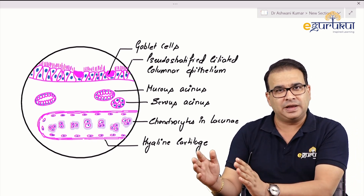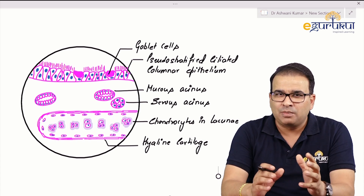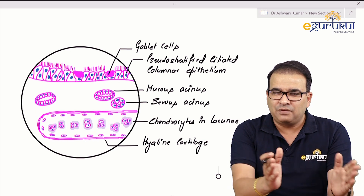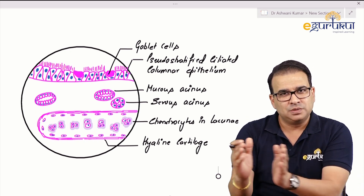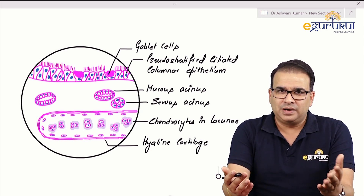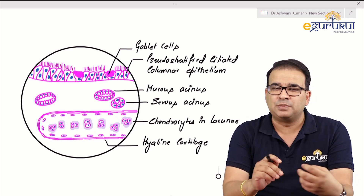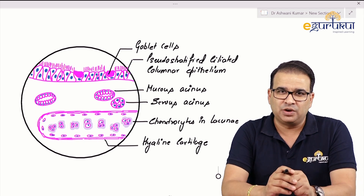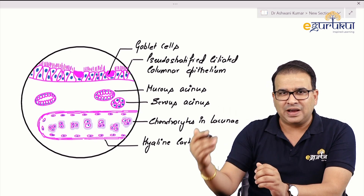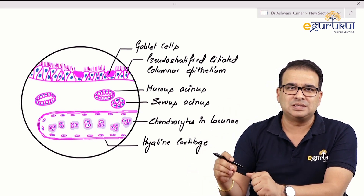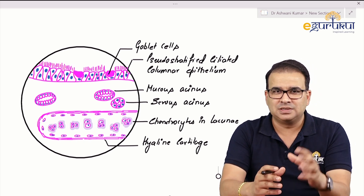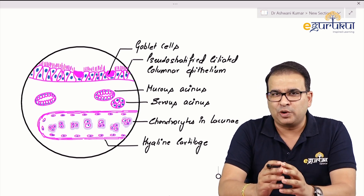Whatever features you write about for that slide should also be visible in your diagram. It's not about how fancy a diagram you draw or your drawing skills — it's about whether you are able to represent your theoretical knowledge in the diagram. This is where you can really score well. People fail to score in histology diagrams because they try to copy the atlas image. Use your knowledge of general histology: know the five to seven important points about that slide and make sure those things are clearly visible, so the examiner's attention is grabbed by those key points.